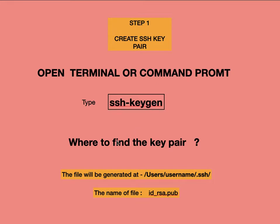Now, where can you find the generated key? Go to your user directory — your username folder — and there will be a '.ssh' folder. If that folder is not visible, it may be hidden. On Mac, you can press Command+Shift+Dot to show hidden folders. Inside the '.ssh' folder, the file 'id_rsa.pub' will be there.